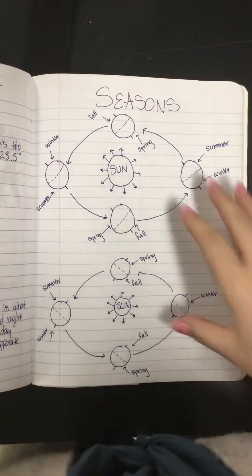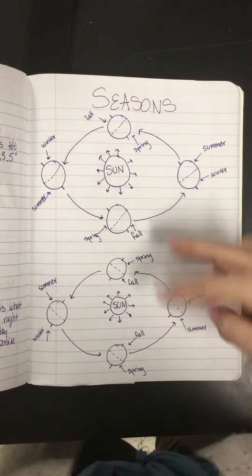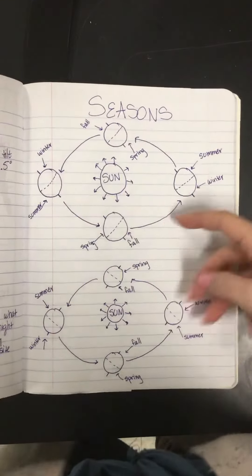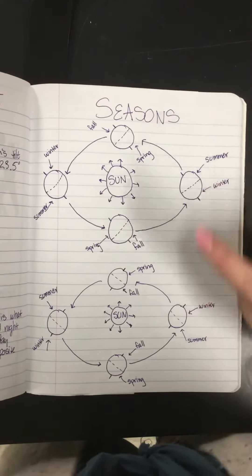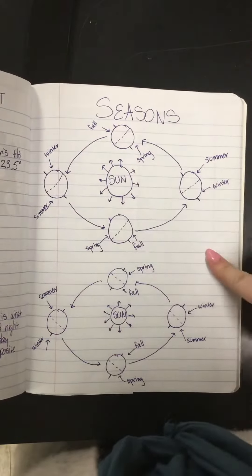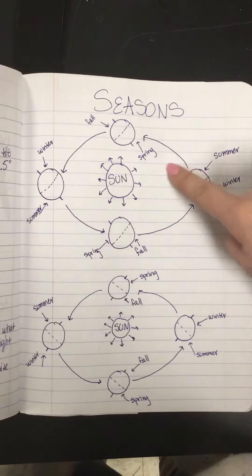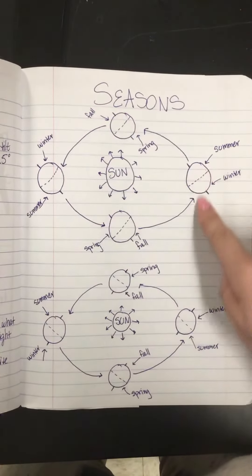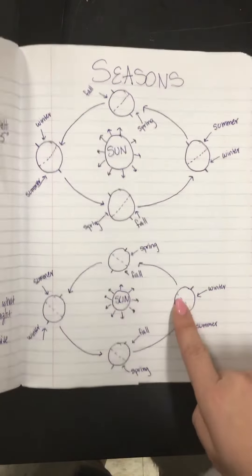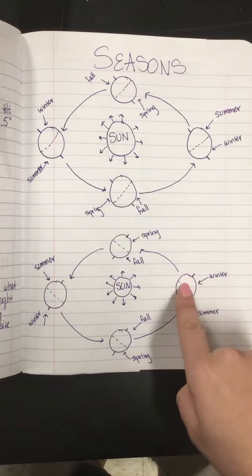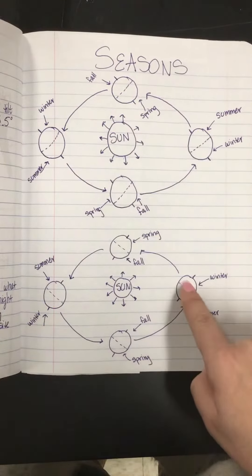I went ahead and drew both diagrams. This is where I don't want us to get confused — you're going to want to pause the video and get this drawn because I'm not going to talk about it for very long. This is the one we just drew together, and the summer for the northern hemisphere is on the right side because the northern hemisphere is tilted toward the Sun. On the right side of this diagram, since we're pointing away from the Sun, we're actually experiencing winter on the right.